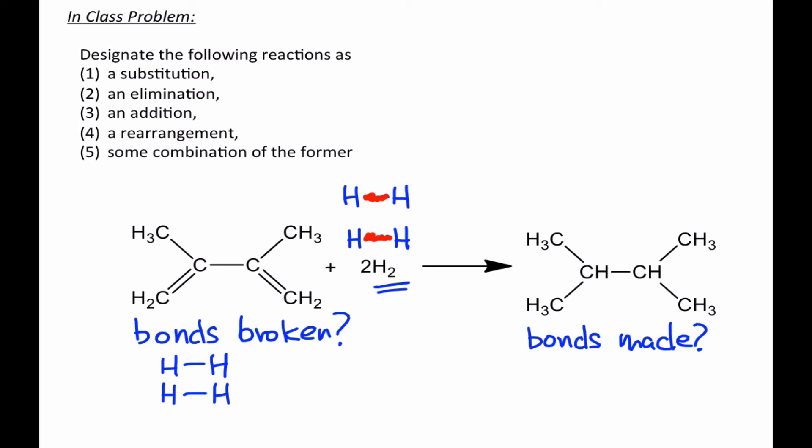Now another thing to notice is that the product lacks double bonds between the carbons where we see double bonds in the starting materials. So this double bond and this double bond have both also broken in the course of this reaction. So once again, two carbon-carbon pi bonds have broken in the course of this reaction.